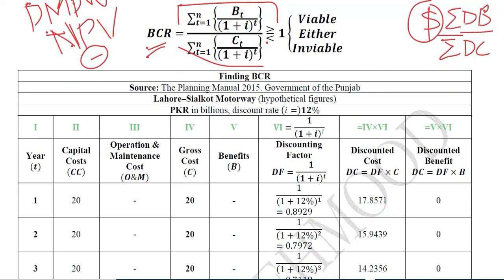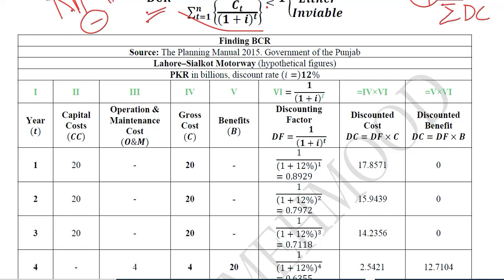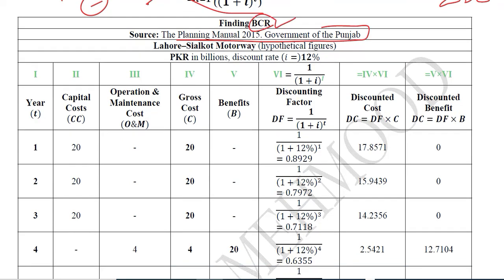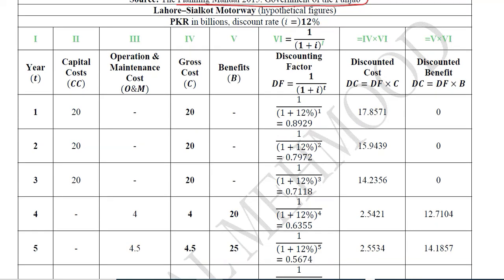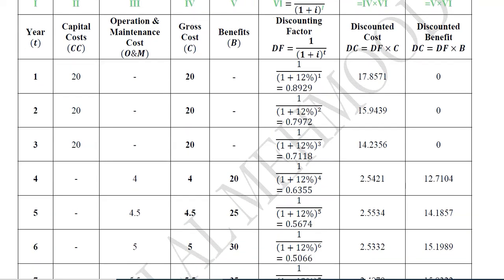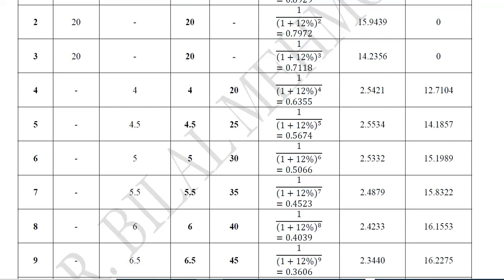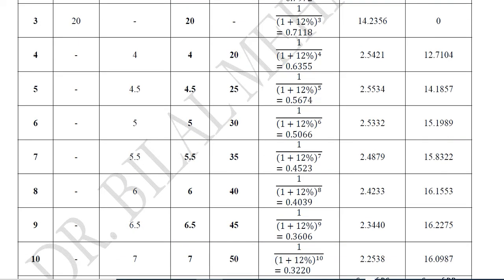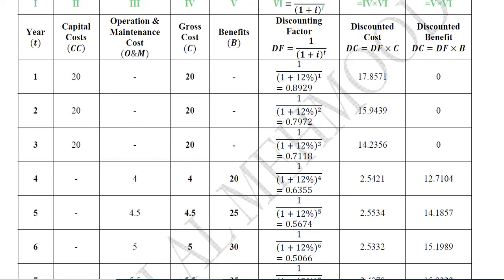We can calculate BCR using the same example used for NPV, so the same data is available. The project spans over 10 years. We have taken a discounting factor of 12%, and here we have the benefits and the costs.